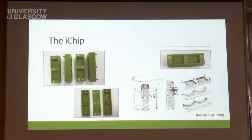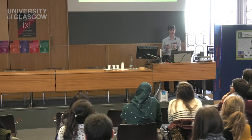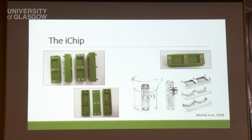The I-chip, or isolation chip, is a small device made up of three plastic components. When the middle component is loaded up with soil bacteria mixed with agar, thin membranes are placed on either side of it, as shown here, and the I-chip can then be fully assembled. When the I-chip is then buried in soil, these membranes prevent other soil microbes from getting into the I-chip and contaminating the experiment, but do allow nutrients to pass through to the bacteria growing within.